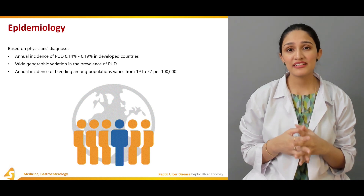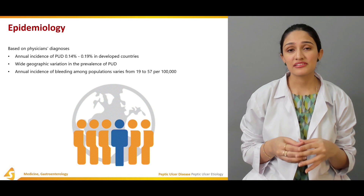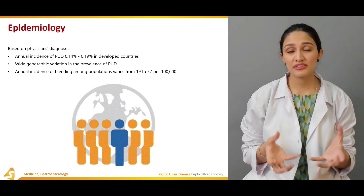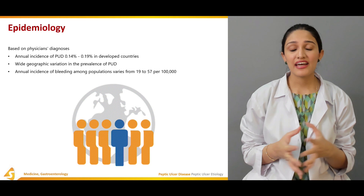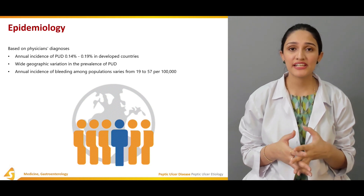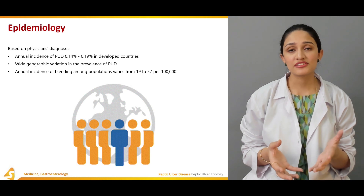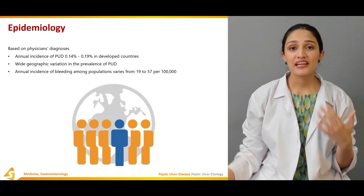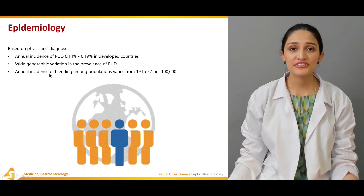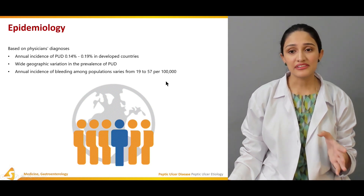Bleeding is the foremost and highest contributing complication regarding peptic ulcer disease. Another complication is perforation, which also occurs as a complication of peptic ulcer disease, with an incidence of around 4 to 14 in 100,000 individuals.